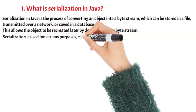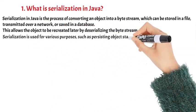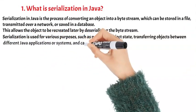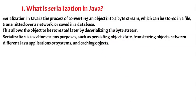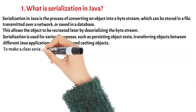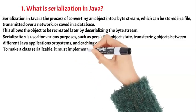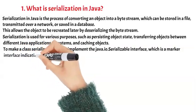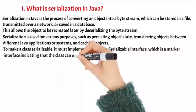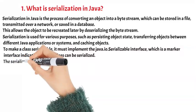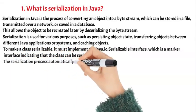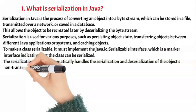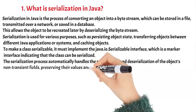Serialization is used for various purposes, such as persisting object state, transferring objects between different Java applications or systems, and caching objects. To make a class serializable, it must implement the java.io.Serializable interface, which is a marker interface indicating that the class can be serialized. The serialization process automatically handles the serialization and deserialization of the object's non-transient fields, preserving their values and relationships.